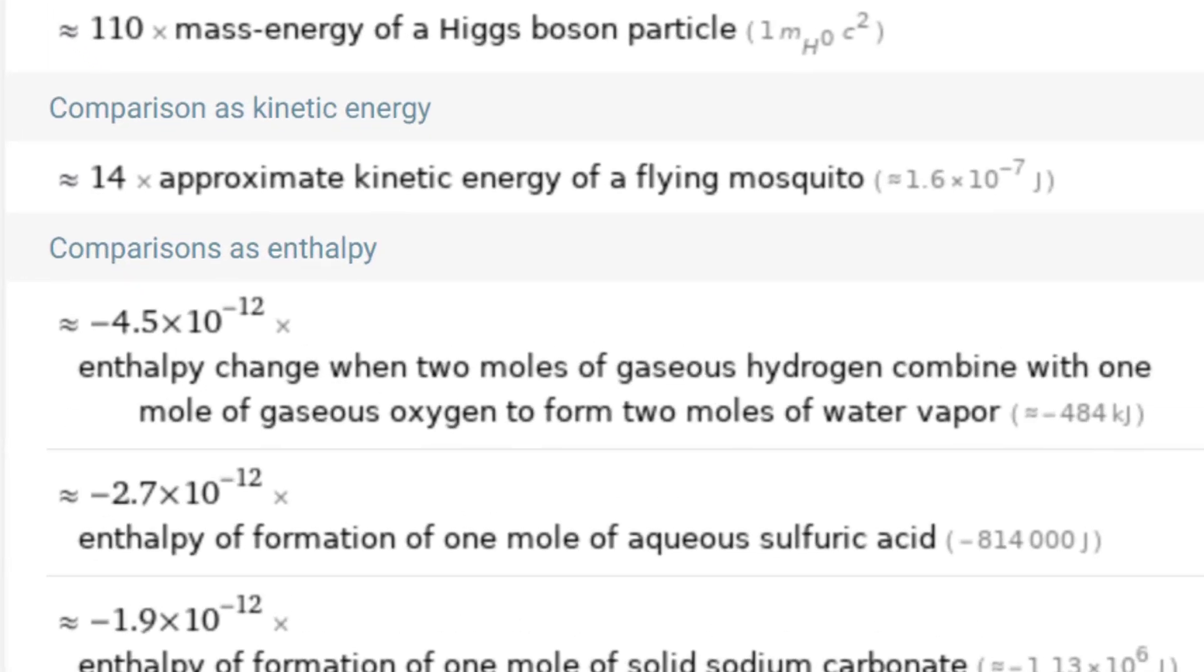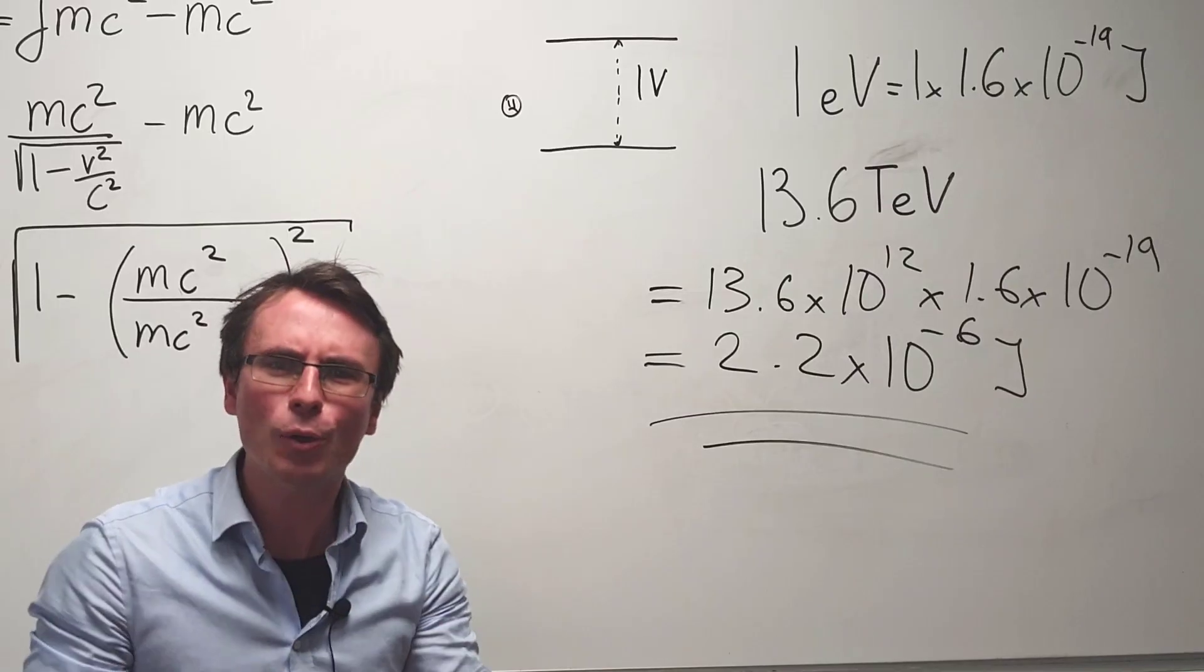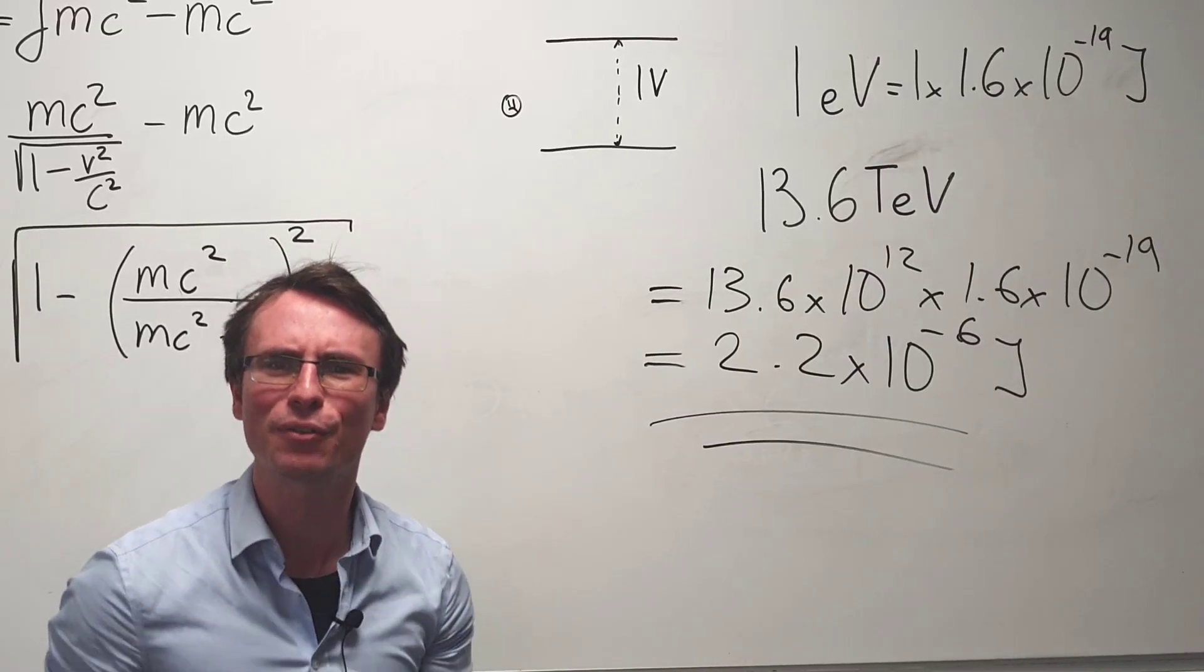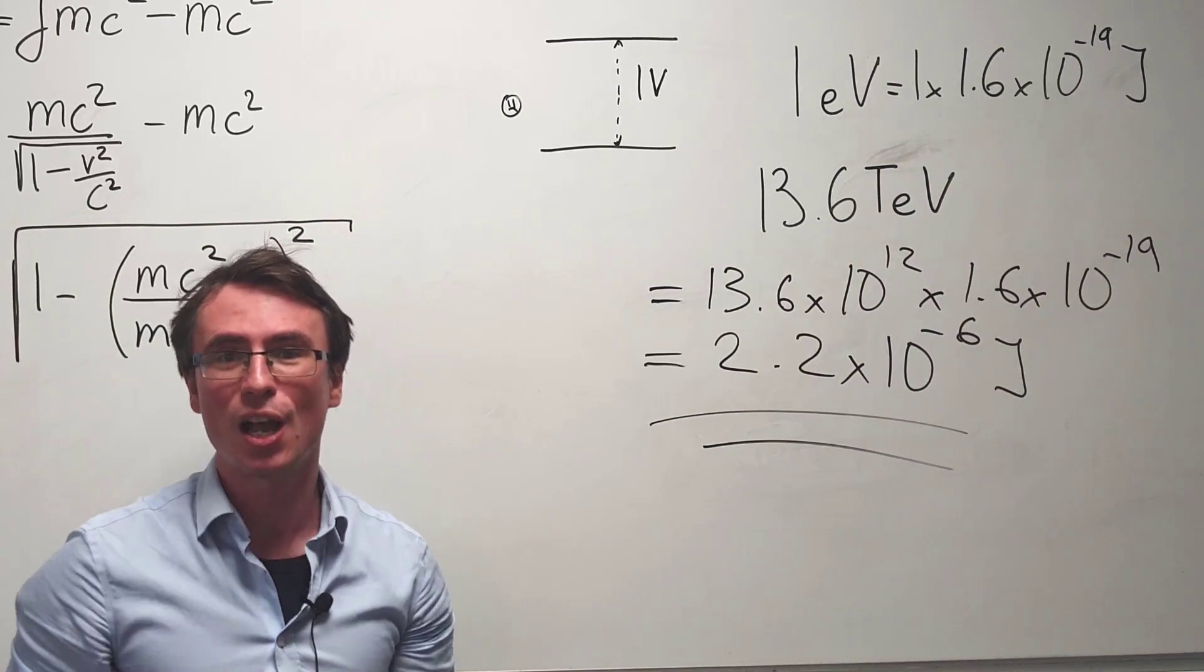In fact, Wolfram Alpha lists this as approximately 14 times the kinetic energy of an average mosquito. So how could we unravel the mysteries of the universe with only approximately 14 times the energy of a mosquito?